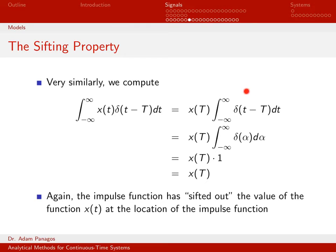So my gut tells me this is probably equal to 1 — who cares where it's located? If I integrate across it, I get a 1. Since I'm integrating from minus infinity to infinity, I end up integrating across this impulse located at time t equals capital T. So my gut tells me this integral should be equal to 1.